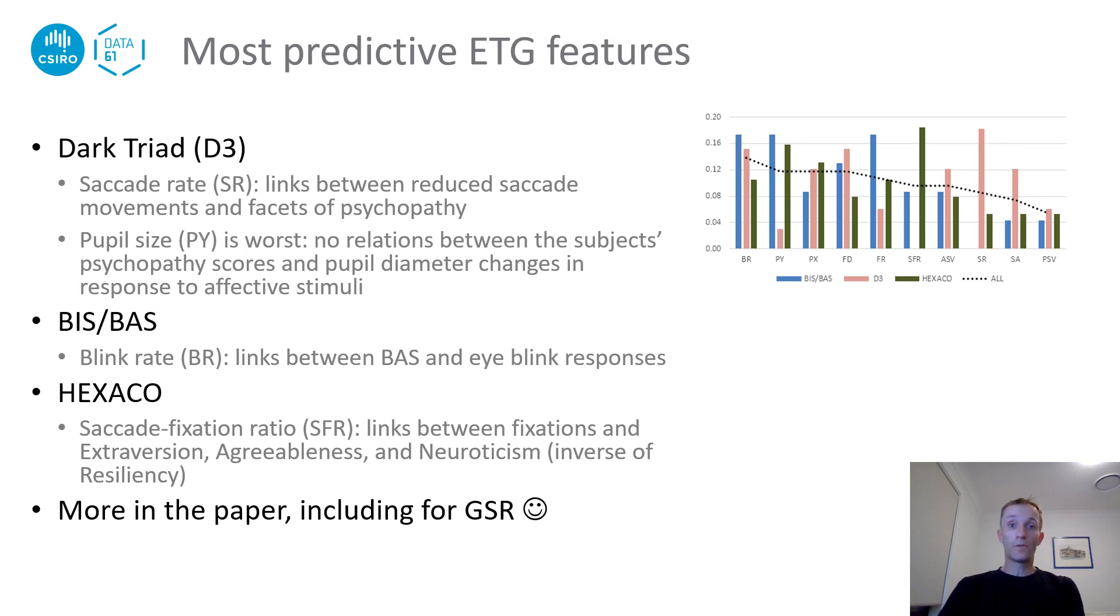Since we use CFS to select features, this gave us the opportunity to check how often each feature gets selected and use it as a proxy for their predictive qualities. Looking at the ETG features, for example, we found that saccade rate was the dominant feature, which may be explained by existing research which established links between reduced saccade movements and some facets of psychopathy. Conversely, literature showed that subjects with higher psychopathy did not exhibit pupil size changes in response to affective stimuli. Our results corroborate this finding, as the vertical pupil size PY in particular is the least predictive feature for this trait group.